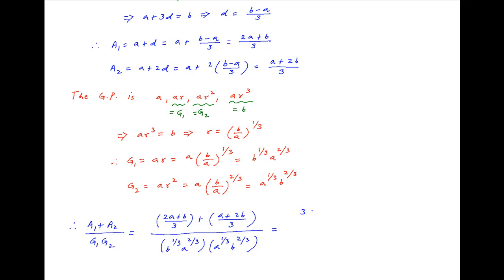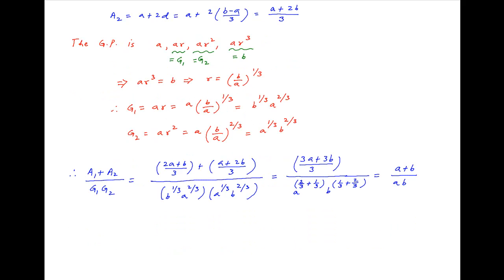Combining the terms with a and b in the numerator, we get 3a plus 3b upon 3. In the denominator, combining the terms with a and b gives a raised to the power (2 upon 3 plus 1 upon 3) multiplied by b raised to the power (1 upon 3 plus 2 upon 3). The numerator simplifies to a plus b and the denominator simplifies to ab. Therefore, the value of the desired expression (a1 plus a2) divided by (g1 times g2) is equal to (a plus b) divided by ab.